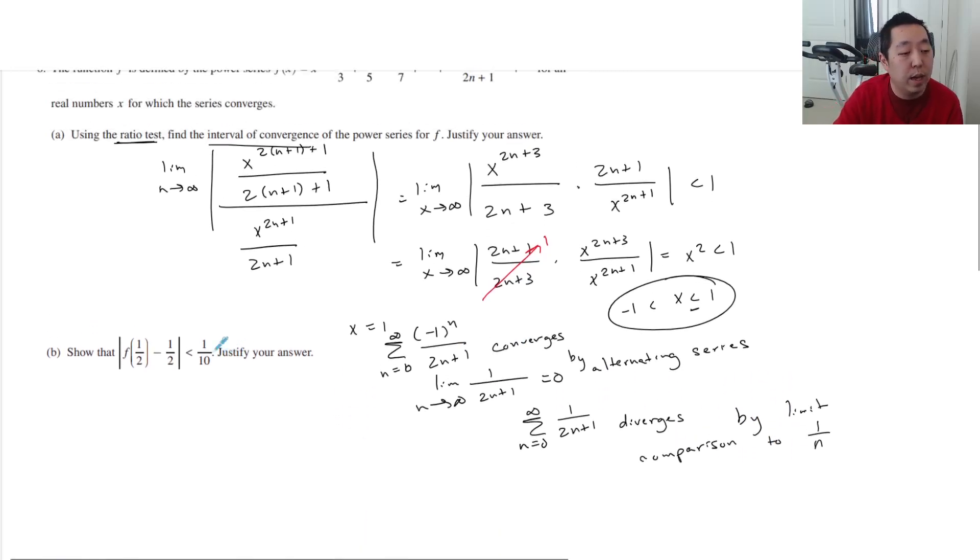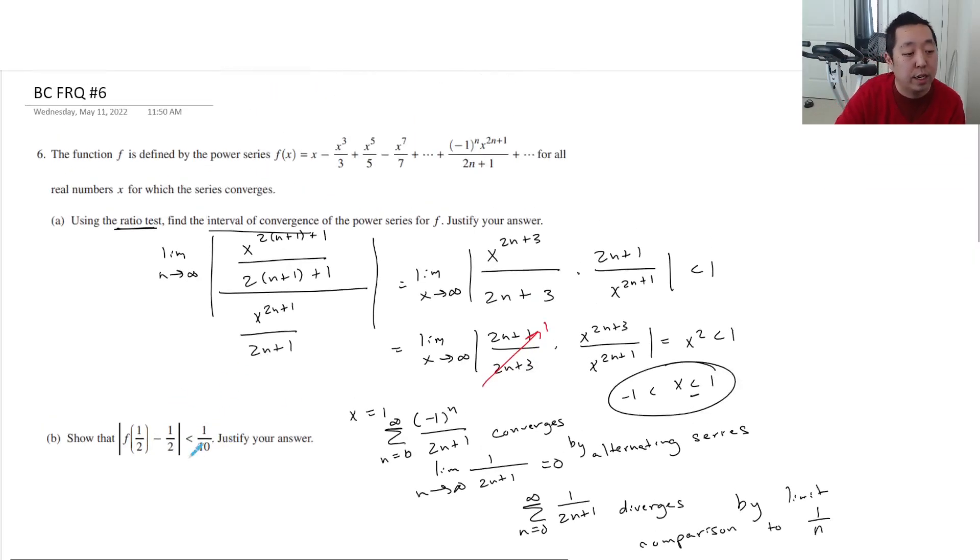Show that f of 1 half minus 1 half is less than 1 tenth. So this is about alternating series error bound, right? This is the difference between the actual value here and here is less than 1 tenth. Well, actually, what is f? f is minus 1 half. Oh, interesting. So they just want you to look at the series when it's... Okay, kind of weird.